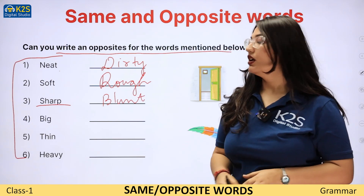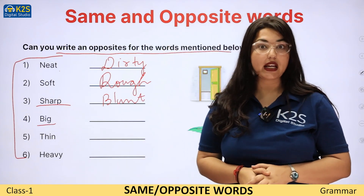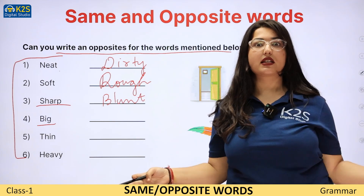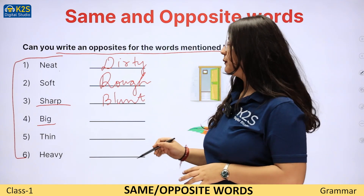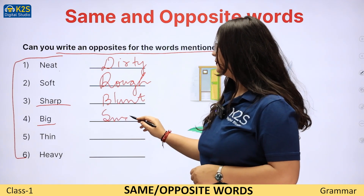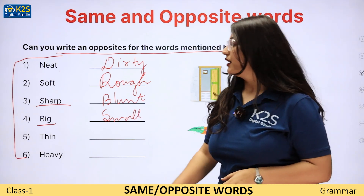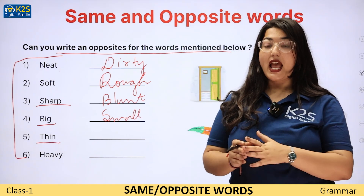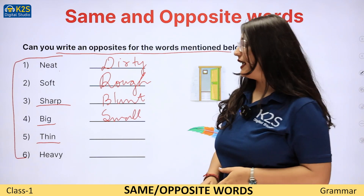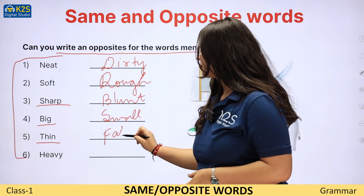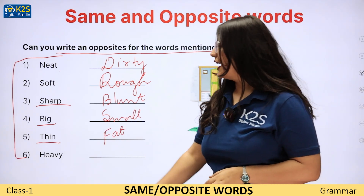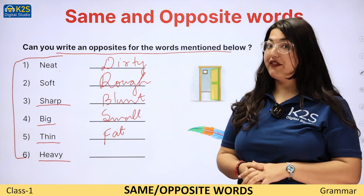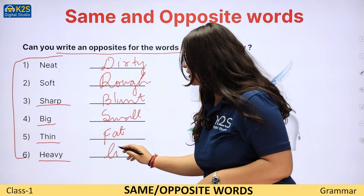Now number four is big — big means large, great in size. So the opposite of big would be small. Now number five is thin — thin means patla. And the opposite of thin would be fat. Now heavy — heavy means bhaari. The opposite of heavy would be light, halka.